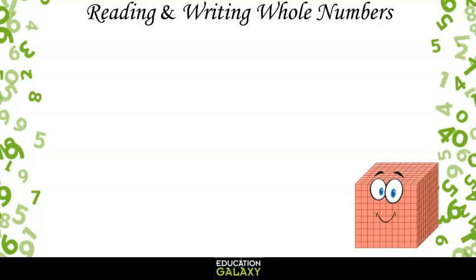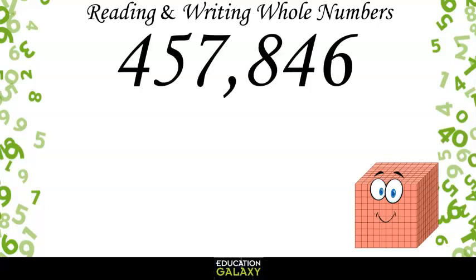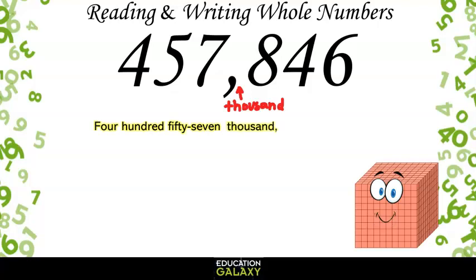When reading numbers, you want to read everything before the comma, and then you read the comma as thousand, and then read everything after the comma. So this number would be 457,846.